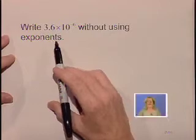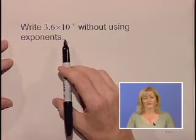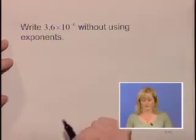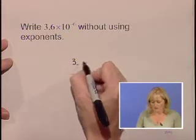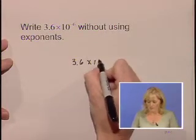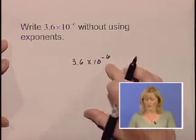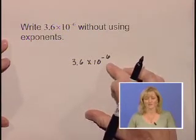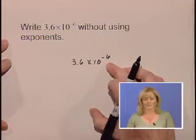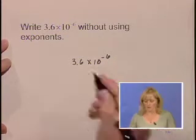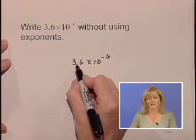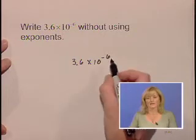Let's do a few more problems on scientific notation. Write 3.6 times 10 to the negative 6 without using exponents. We'll write down our original problem, 3.6 times 10 to the negative 6, and we'll notice that our exponent is a negative number, indicating that this is a number less than 1. We're going to move our original decimal point to the left 6 times.